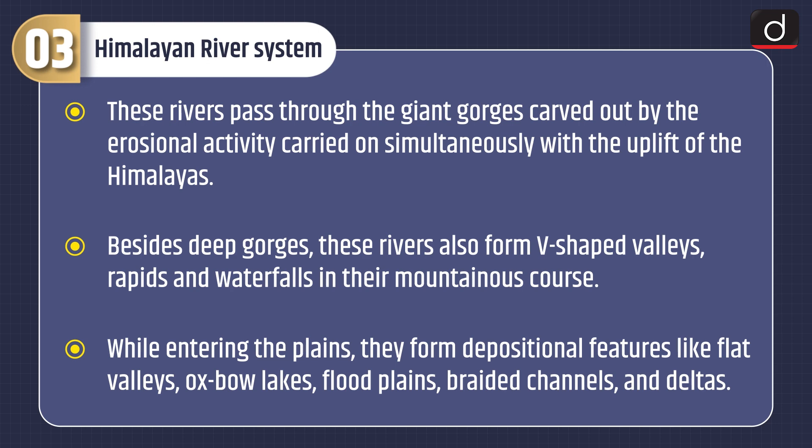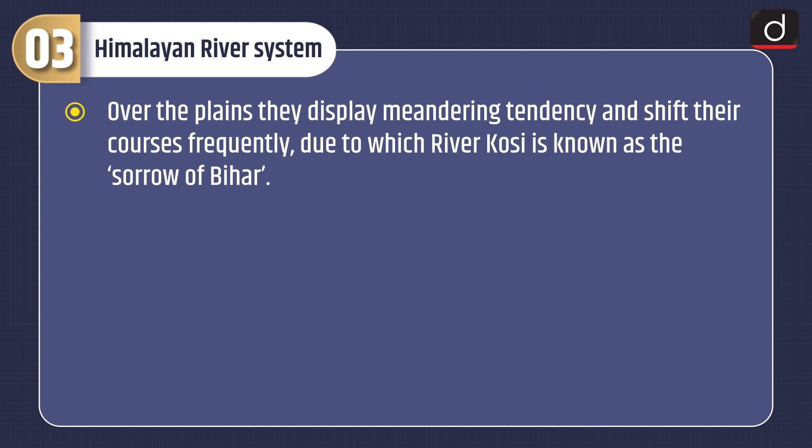Besides deep gorges, these rivers also form V-shaped valleys, rapids, and waterfalls in their mountainous course. While entering the plains, they form depositional features like flat valleys, oxbow lakes, flood plains, braided channels, and deltas. Over the plains, they display a meandering tendency and shift their courses frequently, due to which the river Kosi is known as the sorrow of Bihar.